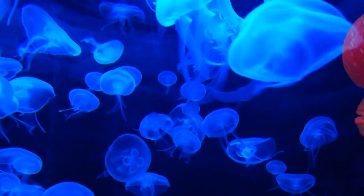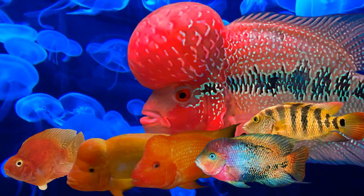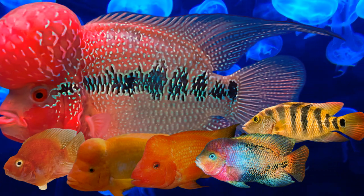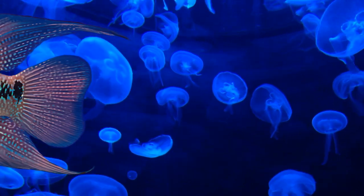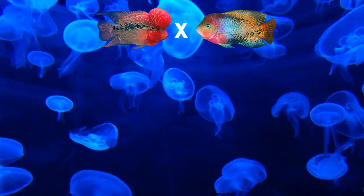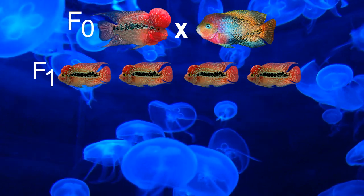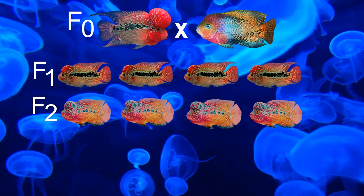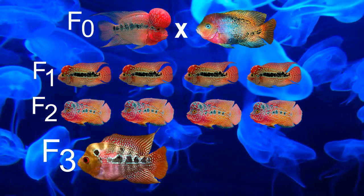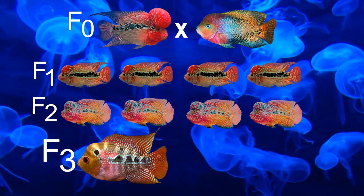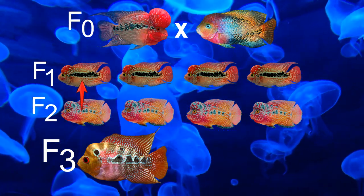Another interesting breeding method is flowerhorn breeding. Flowerhorns are hybrids — they are the result of multiple species of cichlids. Improving these flowerhorns never stops and so does hybridization. In flowerhorns, the P generation is replaced by F0. So a flowerhorn paired with a vieja will be our F0, and the resulting offsprings will be our F1. We pair those F1s together to get our F2s. If we pair an F1 back to its parent, the results are also called F2s. Now, an F3 flowerhorn is a backcross to any of these previous generations — it could be an F2 paired with the F0, or it could be an F2 paired with an F1.